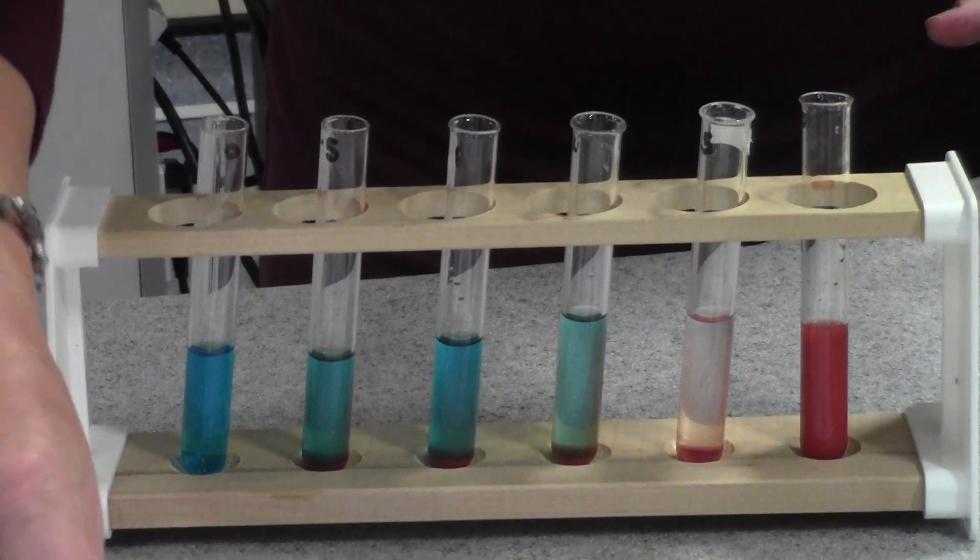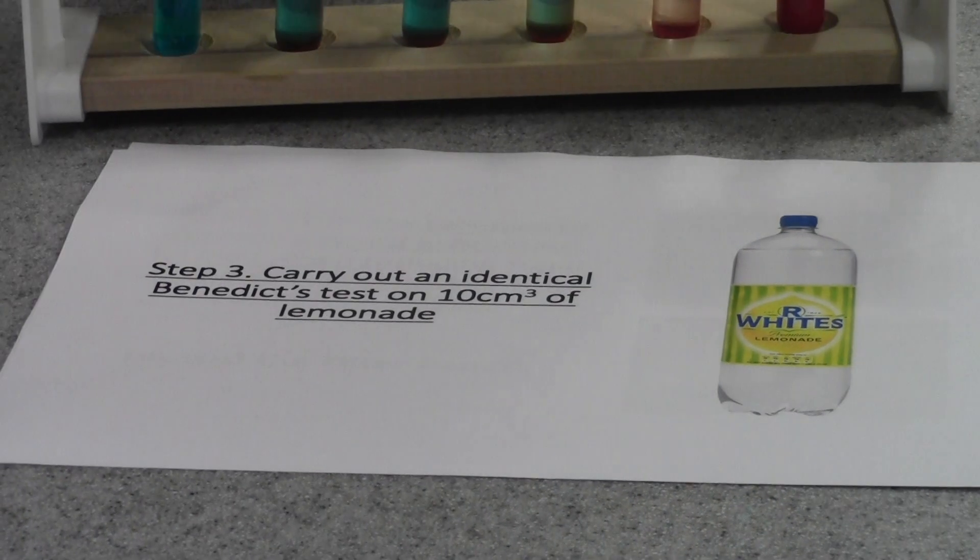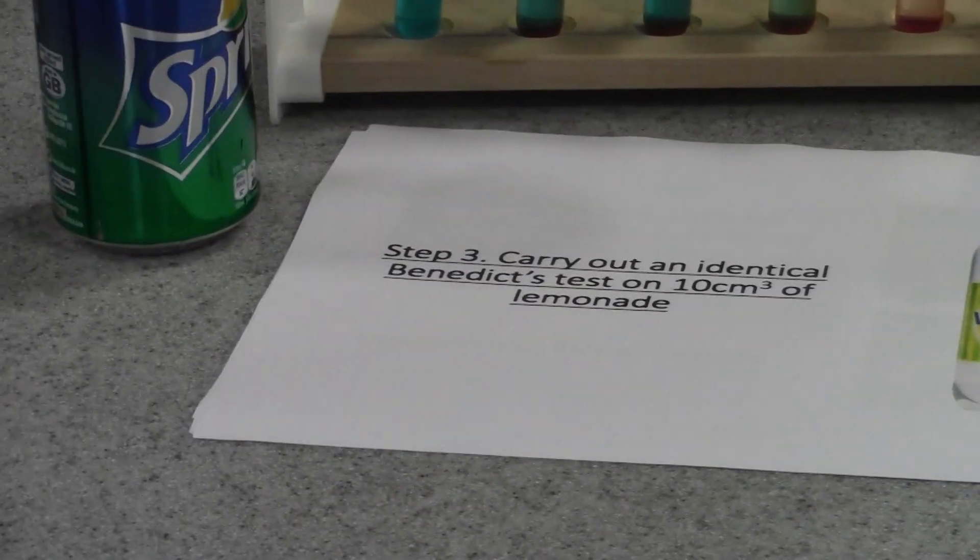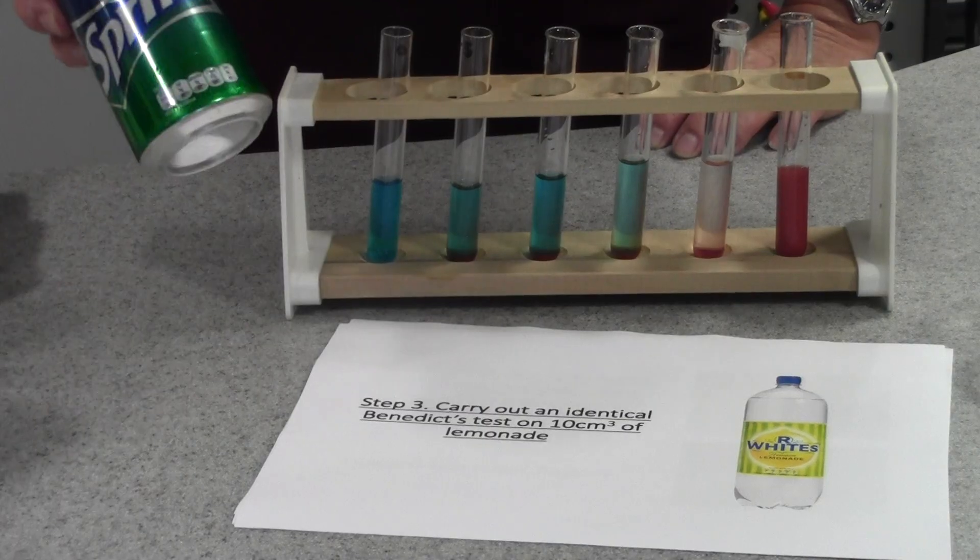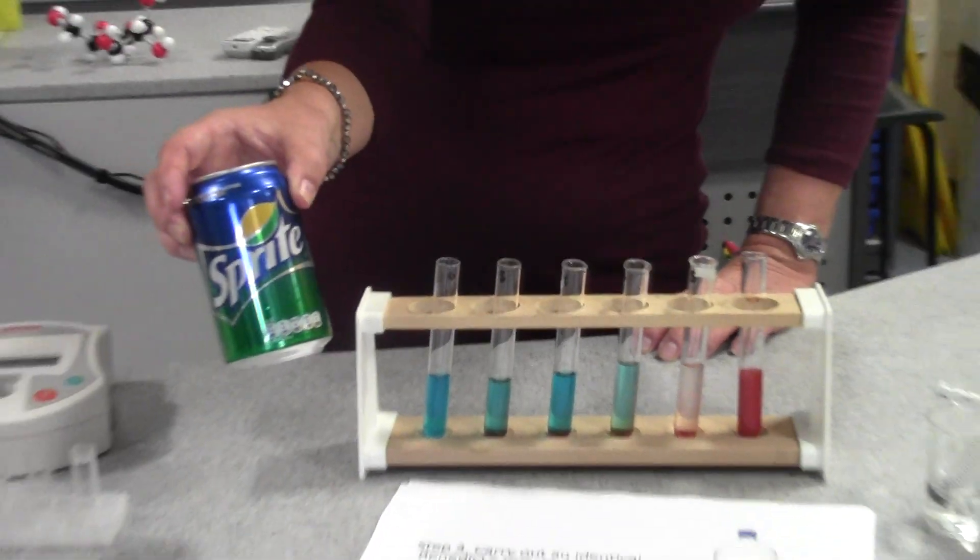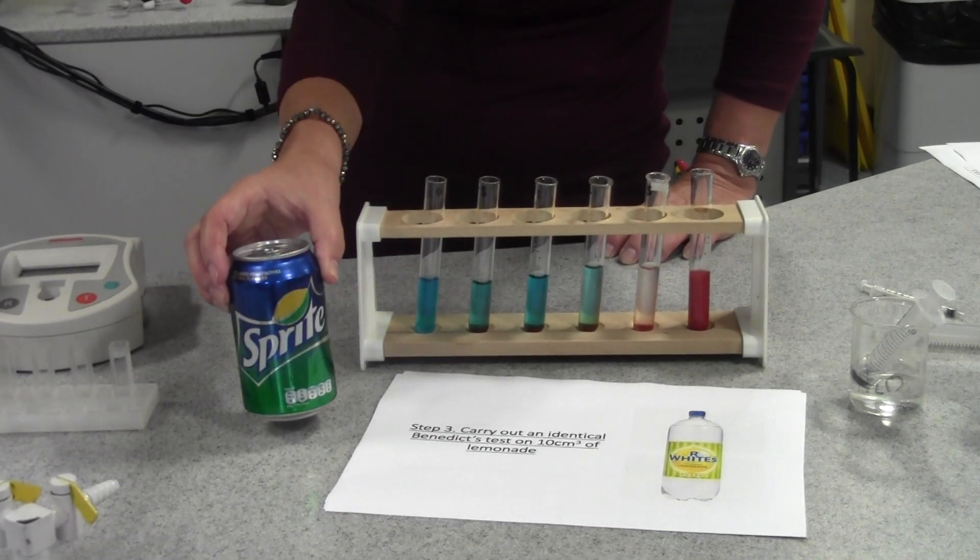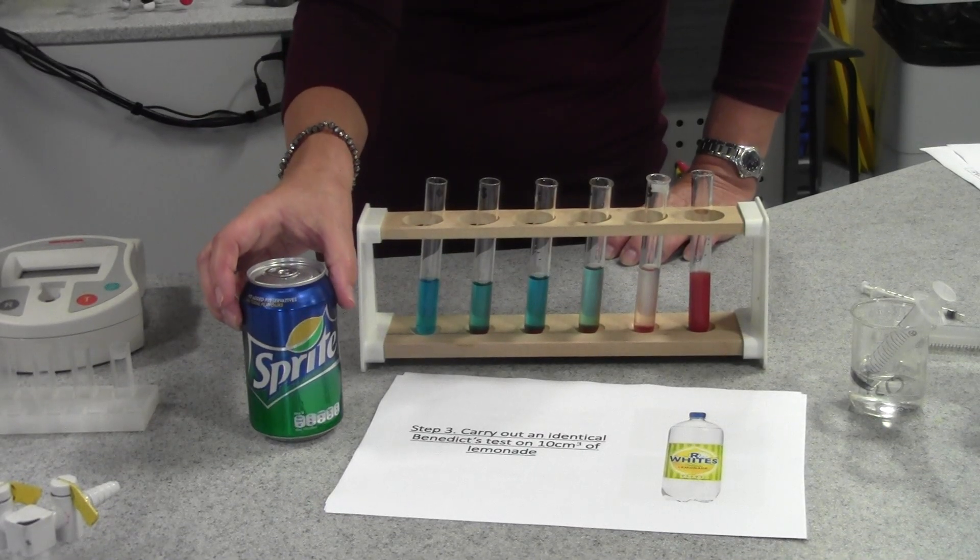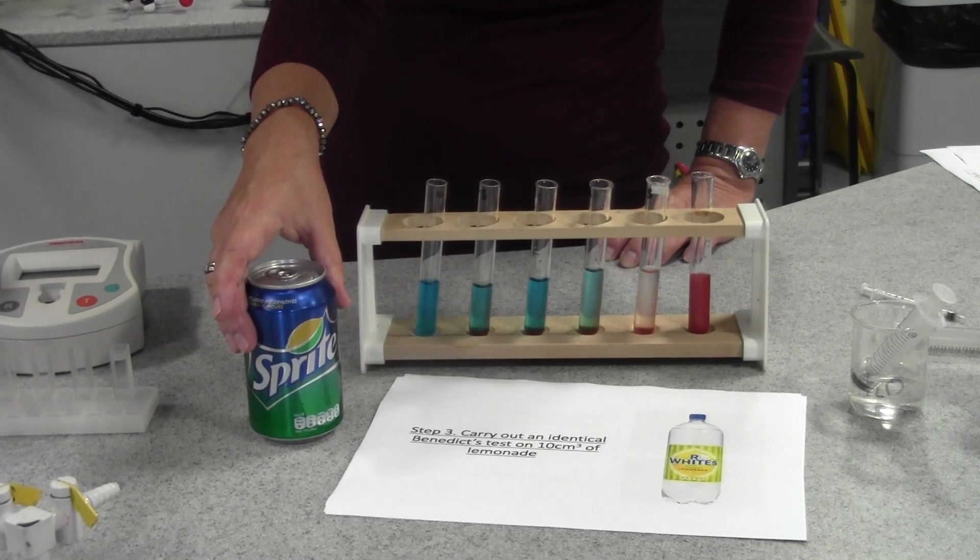As well as testing the standard glucose solutions you also need to carry out an identical Benedict's test using 1 centimetre cubed of your drink and do make sure you don't use sugar free. So 1 centimetre cubed of that again with 5 centimetres cubed of Benedict's solution in a water bath at 90 degrees C for 5 minutes for the reaction to take place.